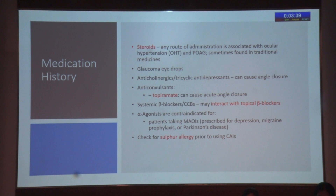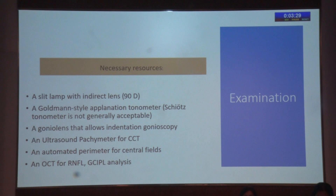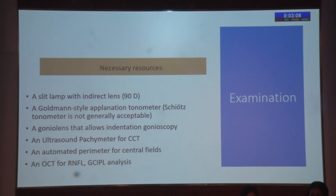Moving on to examination — the important necessary resources are a slit lamp with indirect lens, 90D examination, a Goldmann-style applanation tonometer (Schiotz is generally not acceptable), a gonio lens that allows indentation gonioscopy, an ultrasound pachymeter for CCT, automated perimeter, and OCT for RNFL and GCIPL analysis. These are the important routine tests for the workup of glaucoma.